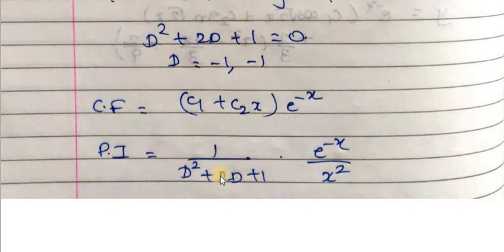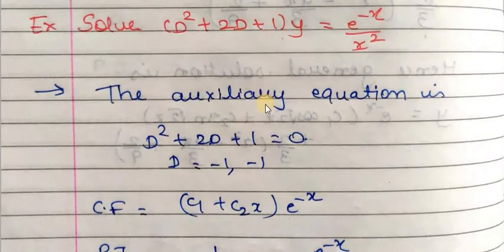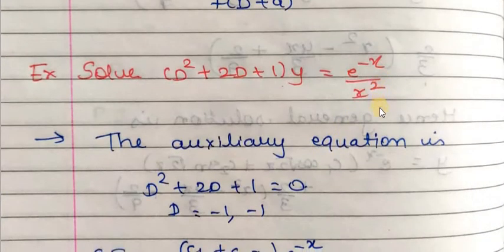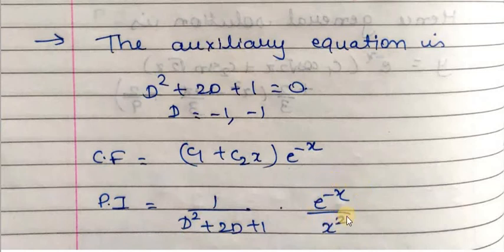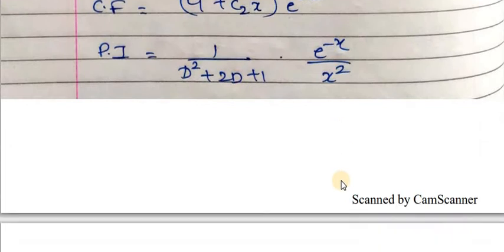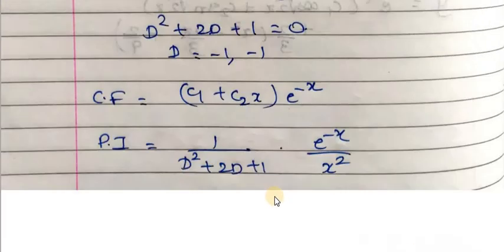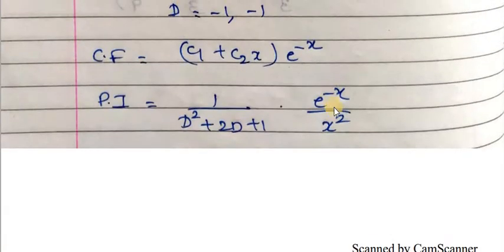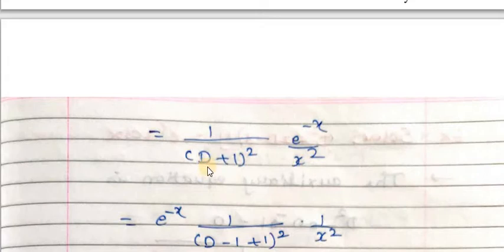The formula for PI is one over f(D) into x. Here f(D) is D² + 2D + 1, so PI = one over (D² + 2D + 1) into e raised to -x over x squared. We can see this is Case 4 because it is e raised to -x into v, where v = 1/x² is a function of x. We write D² + 2D + 1 as (D+1)².